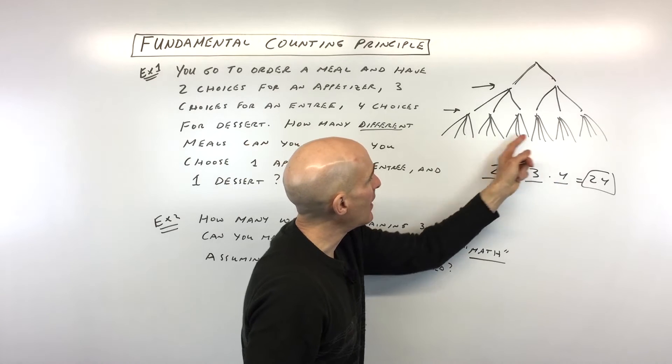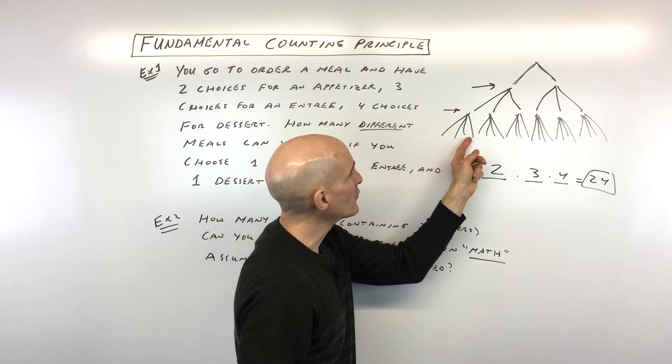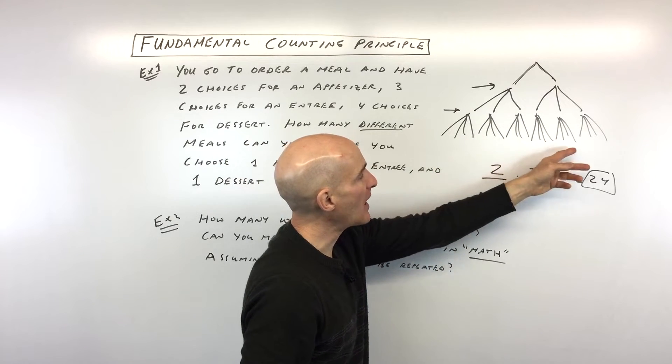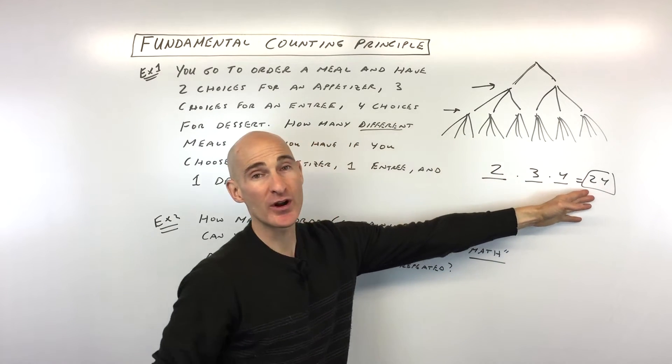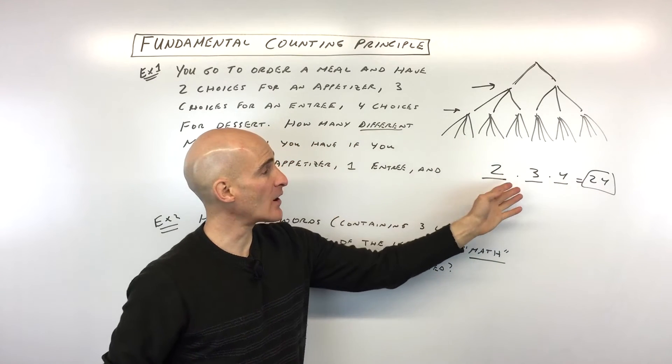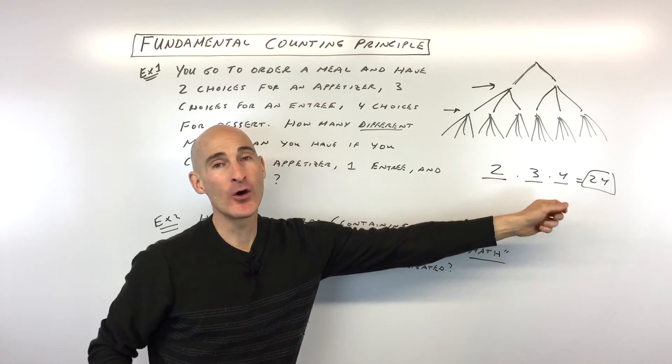If you multiply those out, you get 24 — which is the same number of endpoints we have. If we were to count all those endpoints one by one and add them up, we'd get 24. But this is a lot quicker — just multiply them together.